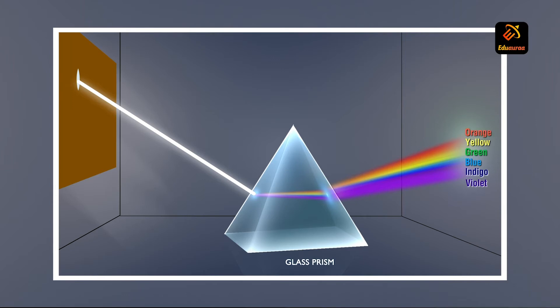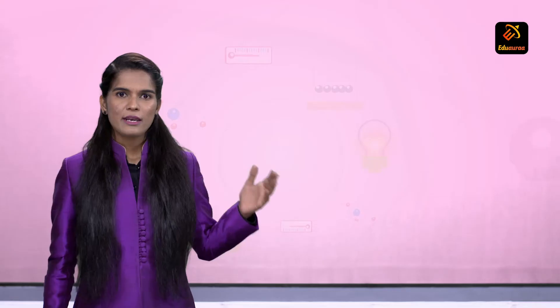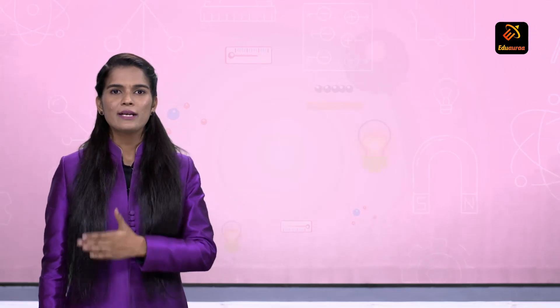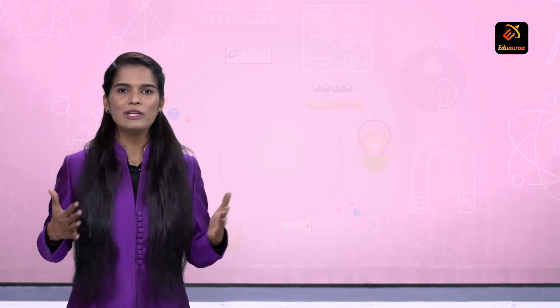And it has been further observed that the band of these seven colors obtained on the screen have no sharp boundaries. Such a spectrum is called impure spectrum because there is no boundary defined. The red color and the violet color at the fringes of an impure spectrum are only pure colors.